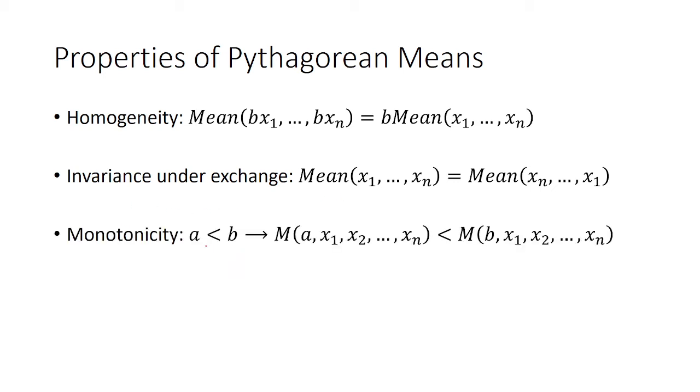Monotonicity says that if I take the mean of a set of numbers that is smaller than another set of numbers, then the mean of the smaller set should be less than the mean of the bigger numbers.